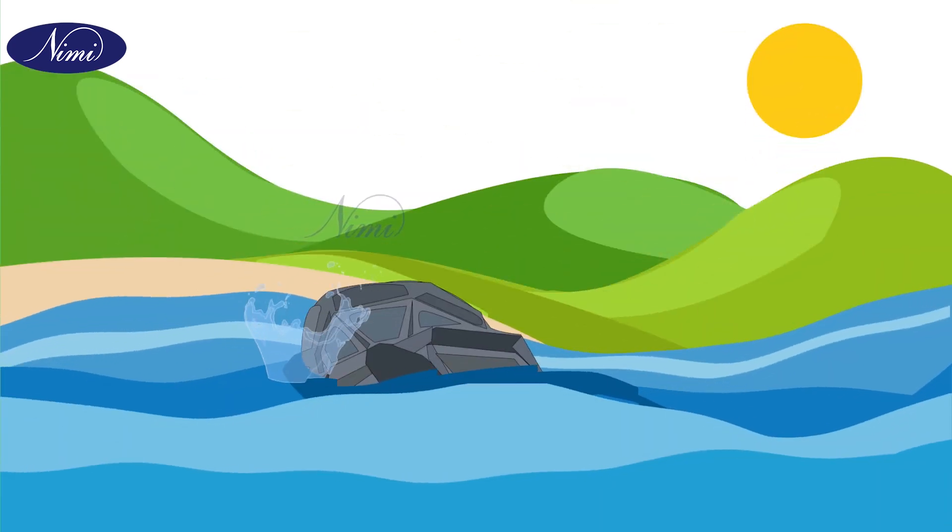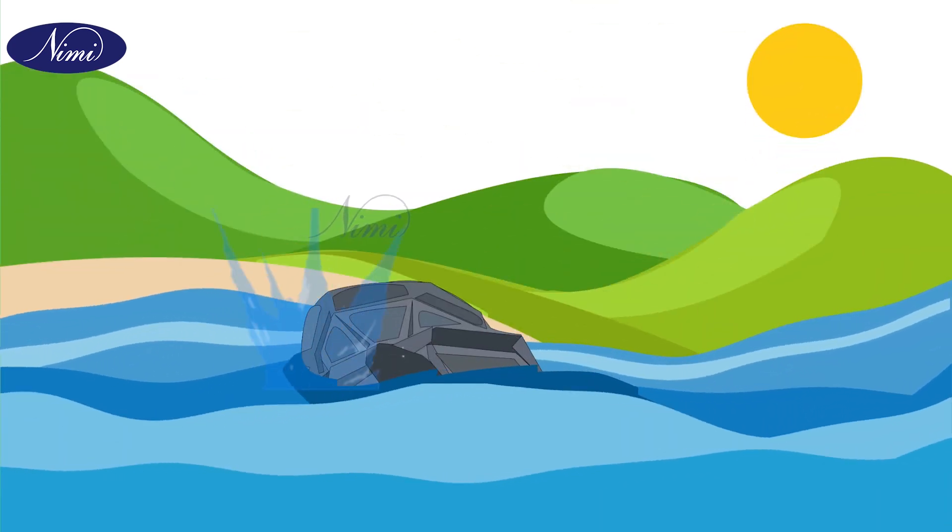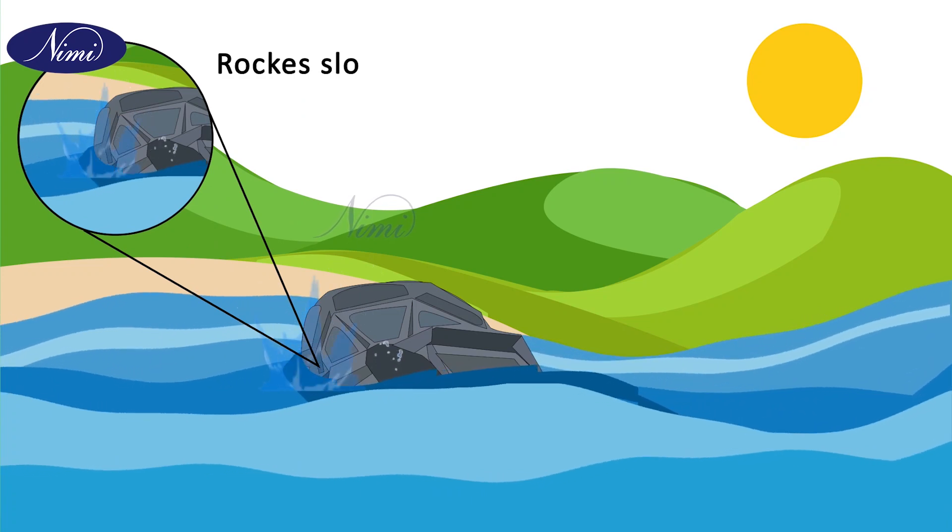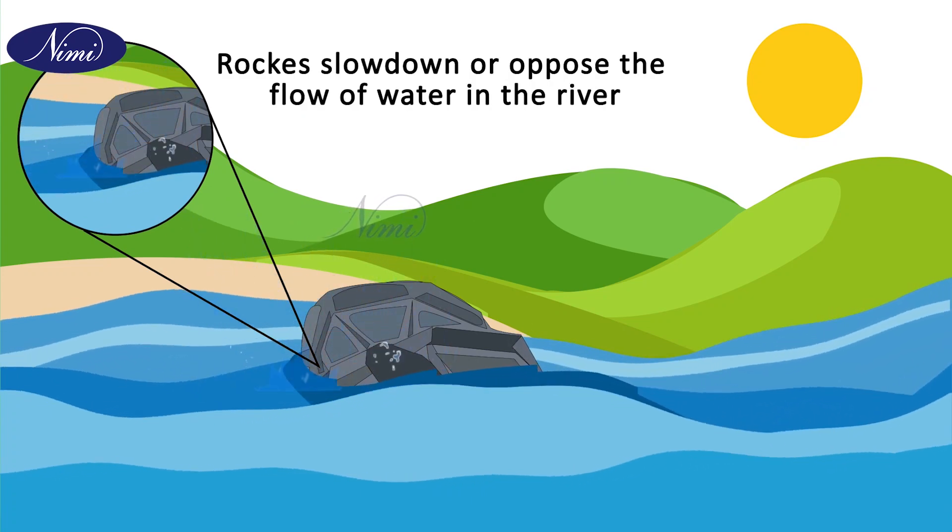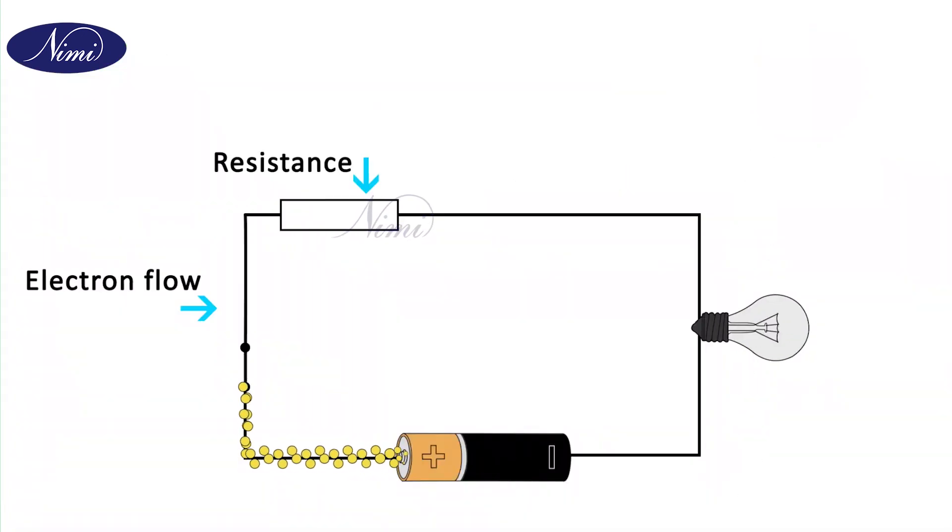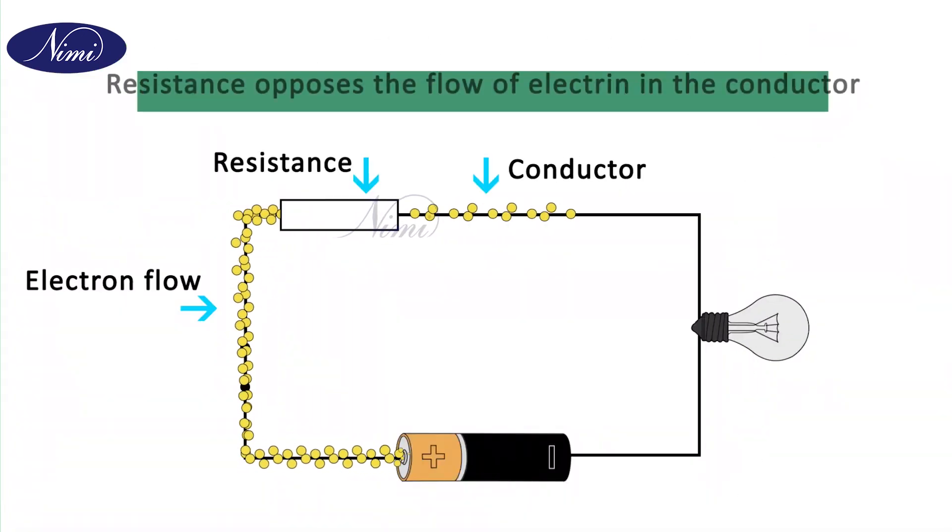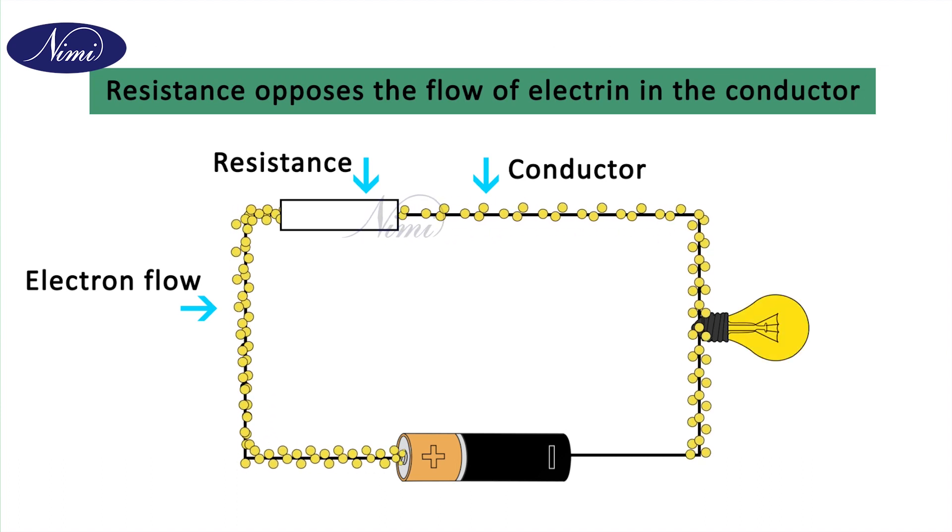In this image, you could see a river containing rocks. These rocks will slow down or oppose the flow of water in the river. Same way, resistance will behave like a rock in the conductor. It will oppose the flow of electrons in the conductor.